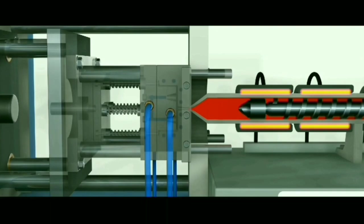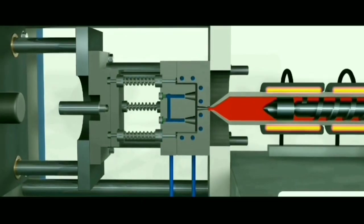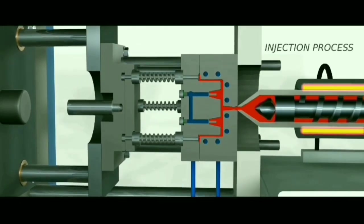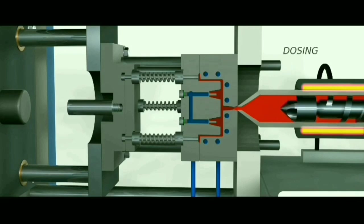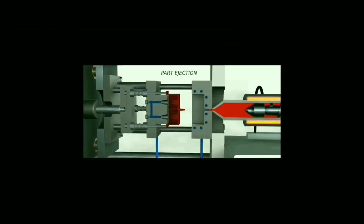Once the material has been melted, we inject it inside the mold. You can clearly see that the screw moves forward, just similar to the injection syringe, injecting the material. After completion of injection, the screw moves backward and the refilling process starts — again similar to the injection syringe.